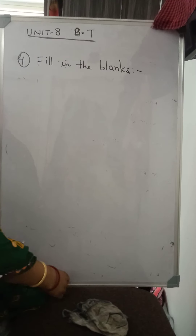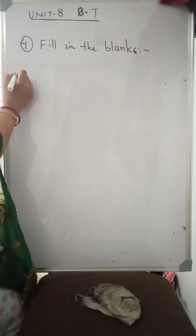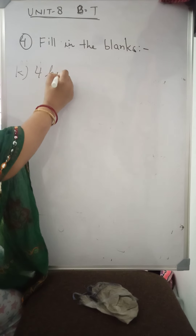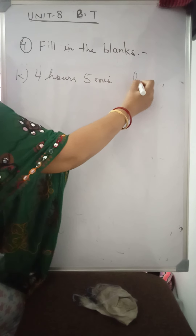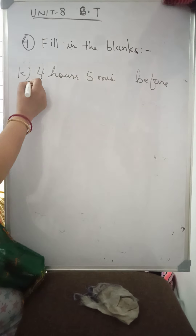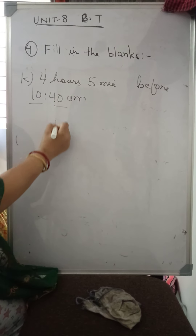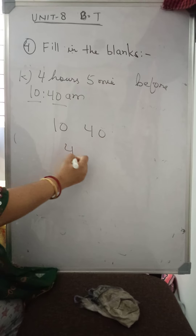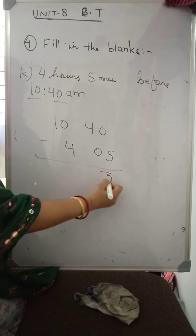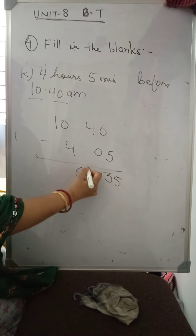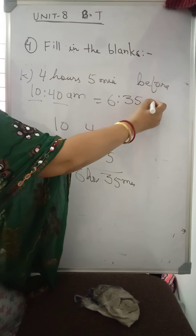Now K: Four hours five minutes before ten forty a.m. We do subtraction — forty minus five is thirty-five, ten minus four is six. So the answer is six hours thirty-five minutes, which means six thirty-five a.m.